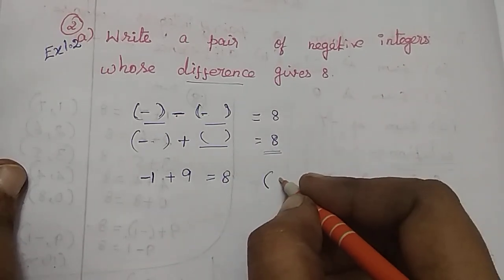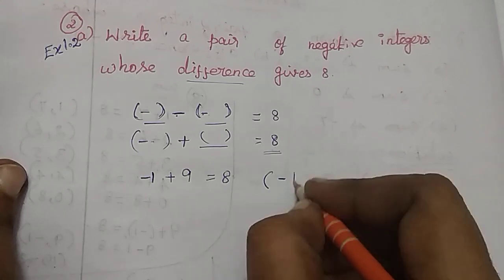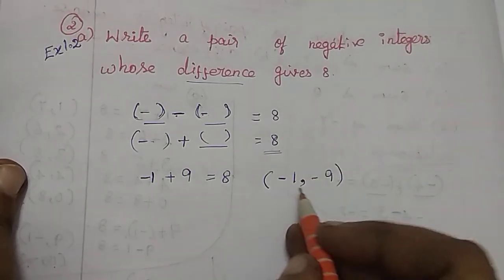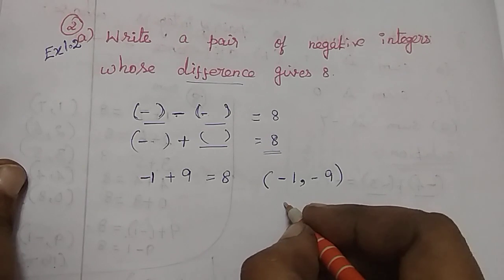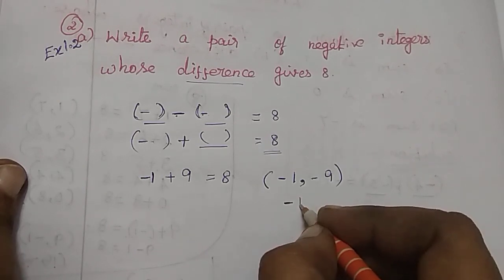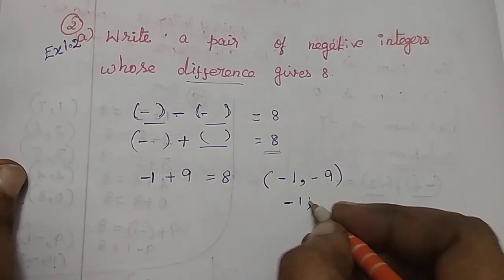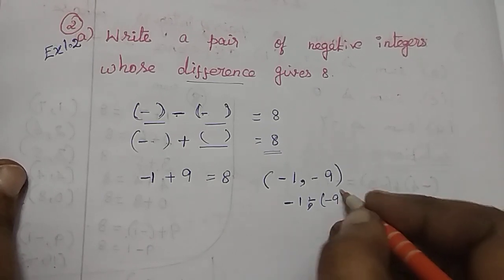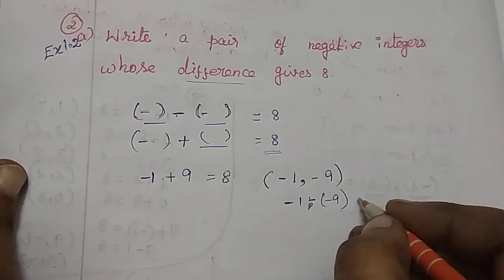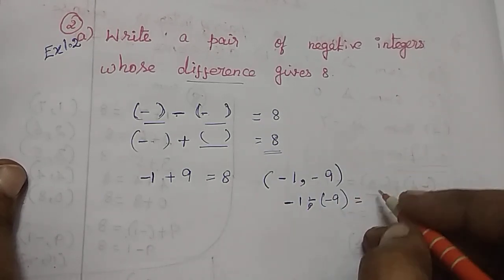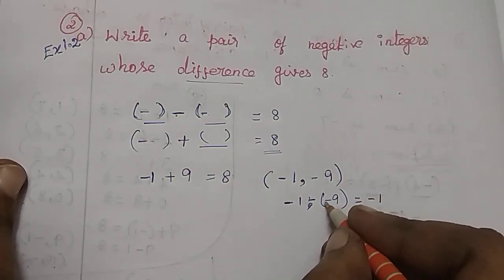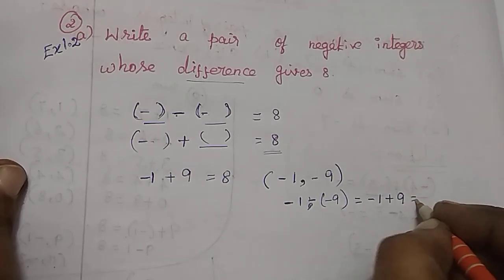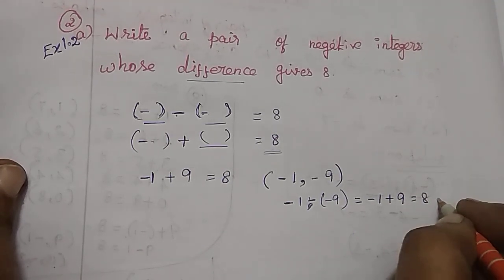So the pair of numbers is: minus 1, minus 9. If we find the difference of minus 1 and minus 9: minus 1 minus of minus 9 equals minus 1, then minus into minus is plus 9, which gives 8.